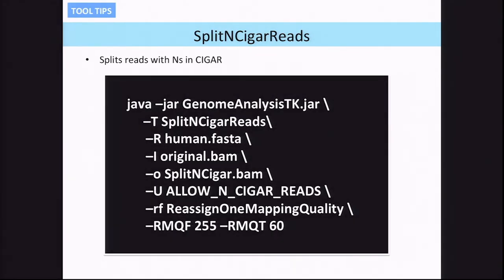Let's see how the command line looks. You use the GATK jar, choose the tool with `-T SplitNCigarReads`, use a reference, provide the input BAM file that has reads with N-CIGAR strings, and specify the output BAM file — which will have the reads split without the overhangs. You have to specify that you want to process the N-CIGAR string. We also use the read filter to reassign mapping quality from 255 to 60. This is how you run the tool.